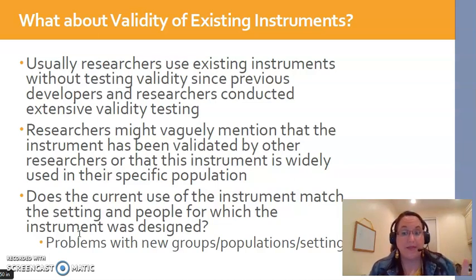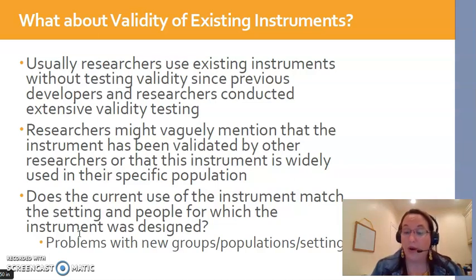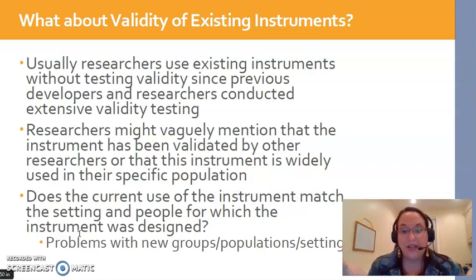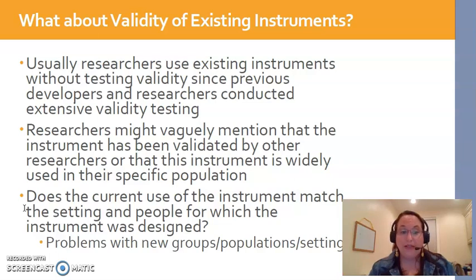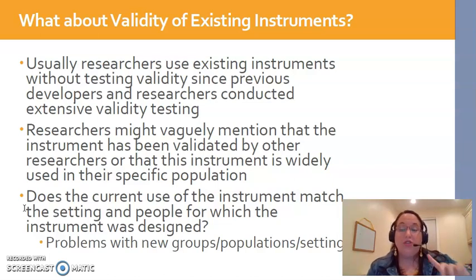Usually when you're reading a study that uses an instrument, a lot of times those researchers are not the ones who created it — it's been in existence, people have used it, it's widely regarded as a great tool. Sometimes researchers do not even mention the word validity anywhere in the methods section. Is that okay? Not really. They should at least tell you the types of participants that tool has been used for. So if it's a preoperative anxiety checklist you want to use for older adults, but it's only ever been used for pediatrics under age 10, we have a problem — older adults' experiences of pre-op anxiety are not the same. We would need to revalidate the instrument for this new population.